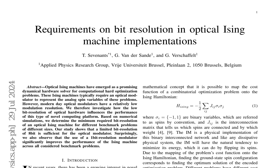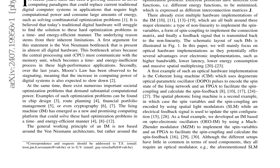The paper explores the impact of low-bit resolution in optical Ising machines on their performance for solving computationally hard optimization problems. It begins by highlighting the limitations of traditional digital hardware in efficiently solving such problems. The authors then introduce the Ising machine as a promising alternative, explaining its working principle based on the Ising Hamiltonian. They discuss various hardware implementations, including optical ones, emphasizing their potential advantages.